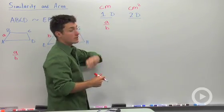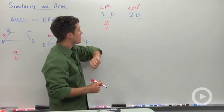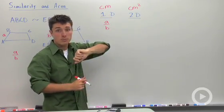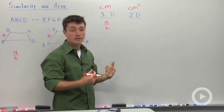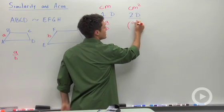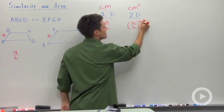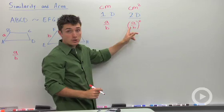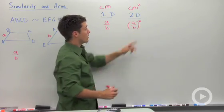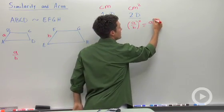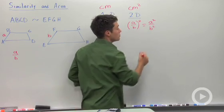So to go from one-dimensional to two-dimensional, we take our exponent and we're going to square it. So in two dimensions, the ratio of their areas will be that ratio in one dimension squared. Or we could say this is A squared to B squared.